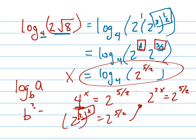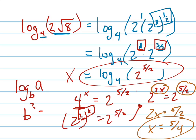And now you use the rule that the exponents must equal each other. So 2X equals 5 halves. I divide both sides by 2, which is 5 fourths. And check your answer.